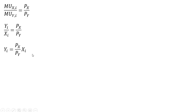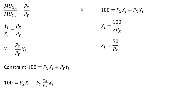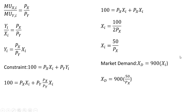Next, we're going to plug this result into the consumer's budget constraint: income $100 equals the price of good X times units of good X, plus the price of good Y times units of good Y. We substitute in for Y, and noticing that the price of good Y terms cancel, we get the individual consumer's demand for good X. Simplifying, $100 divided by 2, we have that result. Now to get market demand, since we have 900 consumers, it's just 900 times the individual consumer's demand — plugging in 50 divided by the price of good X and simplifying gives us the market demand for good X.